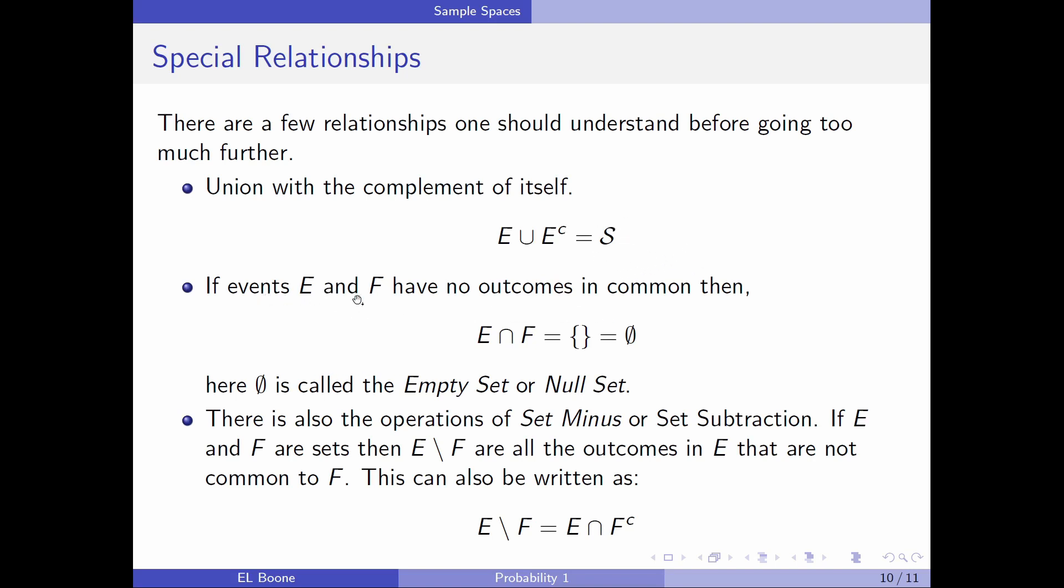If we have events E and F that have no outcomes in common, when we take their intersection, we're going to end up with nothing, and we need a way to write nothing. So we could write it with a brace, brace with nothing in it, or we could use this special symbol, and this is called the empty set or null set. So if there's nothing there, there's nothing in common, this is what we would write. We don't want to write zero because zero is an actual thing. So we write this because this is supposed to stand for it's not a thing.